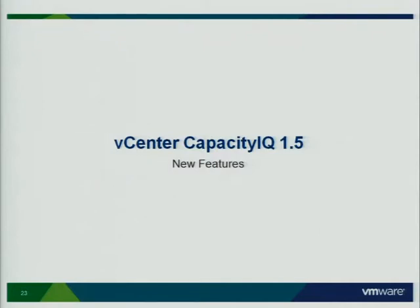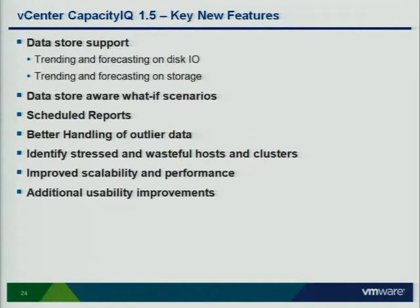Capacity IQ 1.0 was released last October and did trending and forecasting based on CPU and memory. After release, the big request was for analysis based on storage. The focus for 1.5 is to add support for data stores and back-end storage — you can now do trending and forecasting based on storage IOPS as well as actual disk space used. What-if scenarios have also been updated to include storage and data stores. That was the number one customer request.